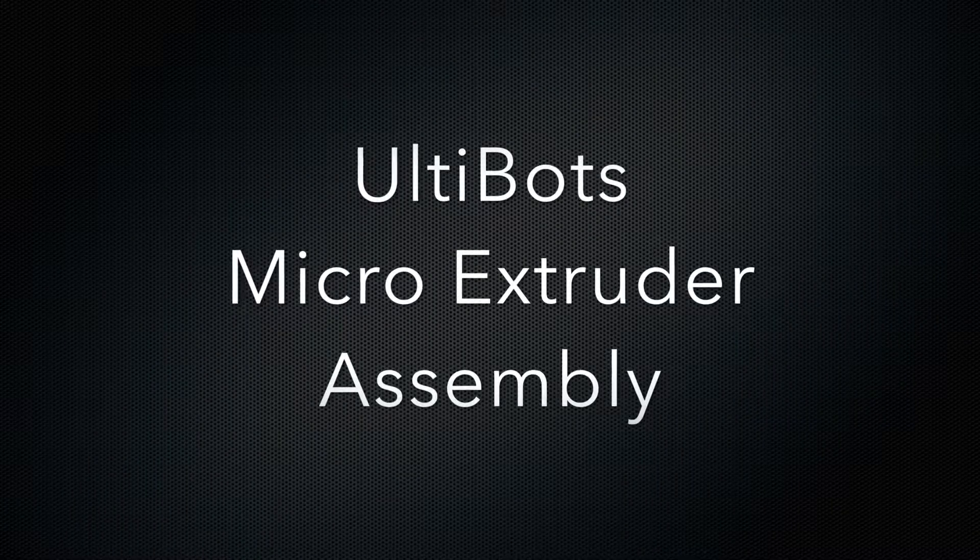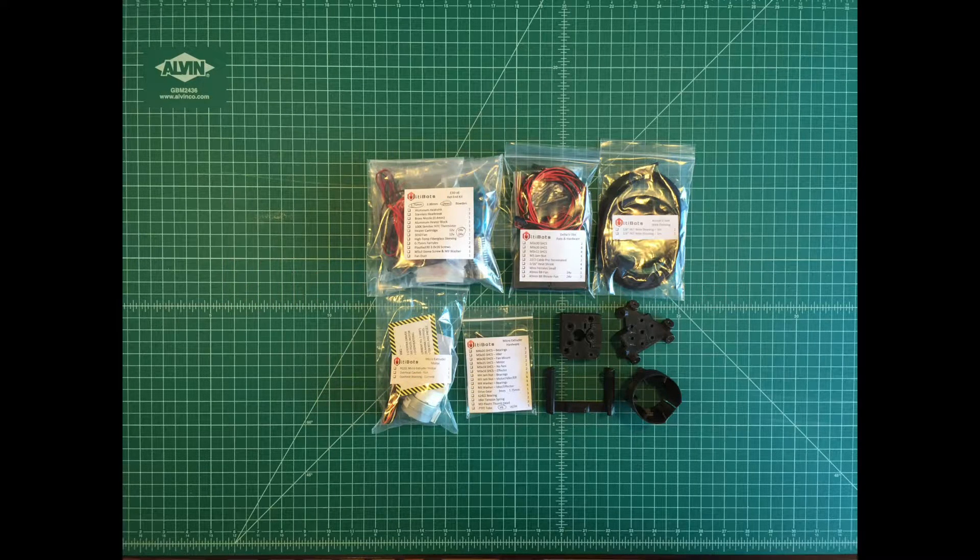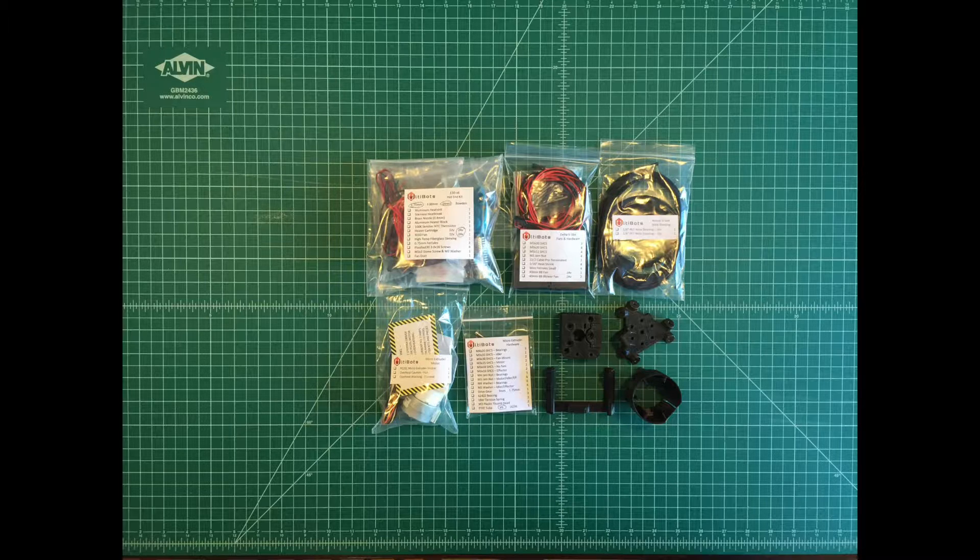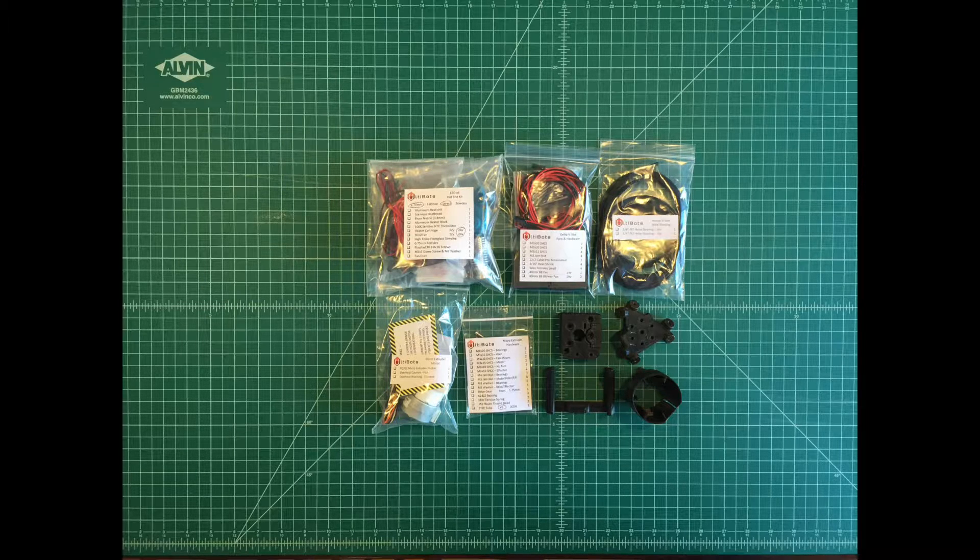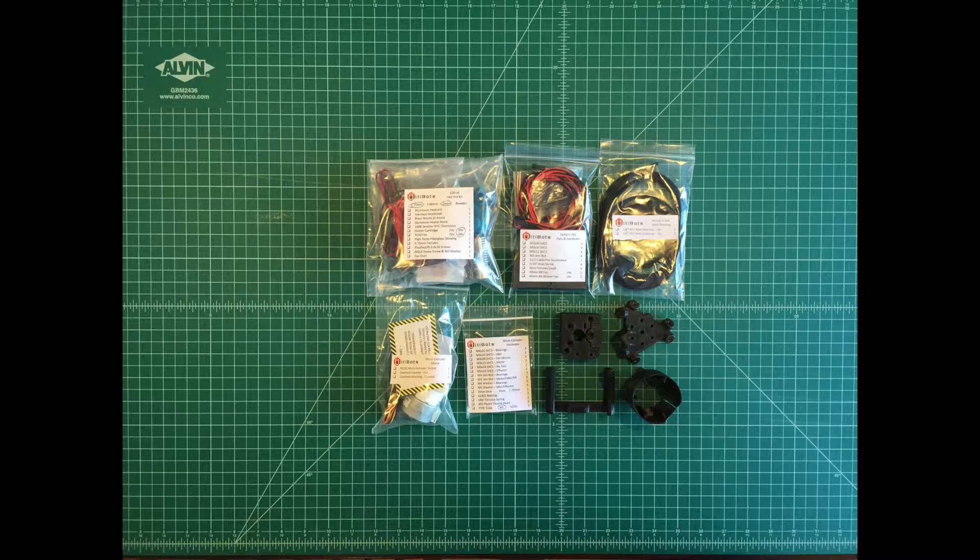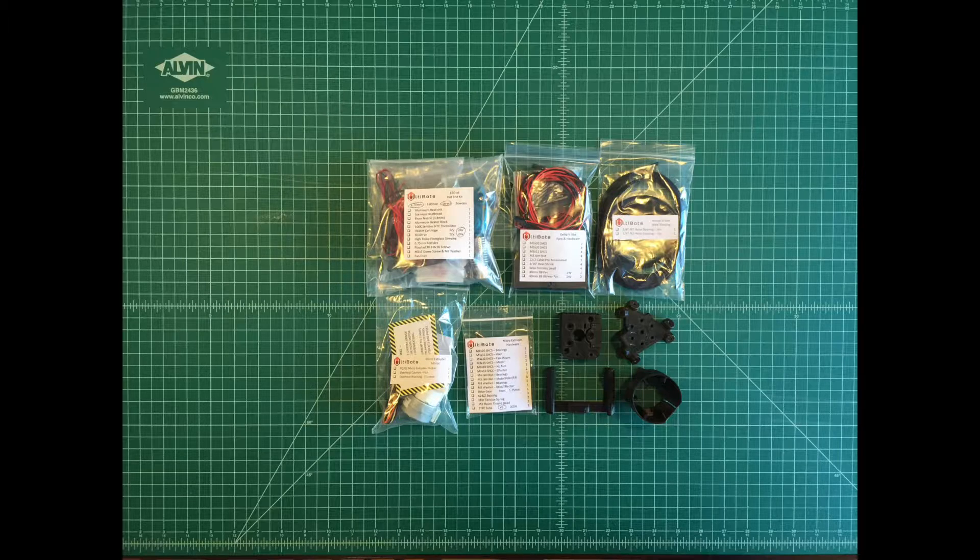In this video the Ultibots Micro Extruder is assembled. Gathered materials include the Micro Extruder Hardware Bag, E3D V6 Hot In Bag, Micro Extruder Motor, Fan Kit, and plastic parts including the Micro Extruder Body, Idler, MagVol Effector, Parts Blower Mount, and Extruder Motor Fan Duct.